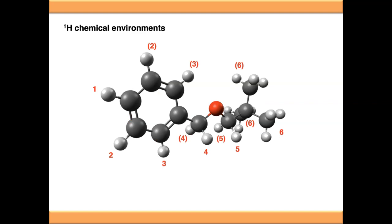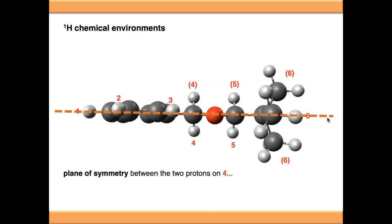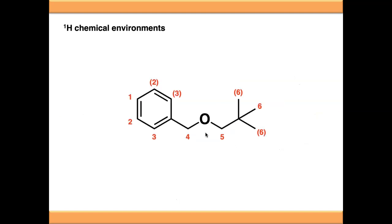Let's convert the molecule into 3D to see what we're doing in terms of axes of rotation and planes of symmetry. We turn the molecule 90 degrees towards you, looking down on top of the oxygen atom. Looking down the backbone, we can see a plane of symmetry all the way through the middle of it. At position 4, one proton is on either side of this plane of symmetry — it runs straight through carbon 4. That means they are chemically equivalent, and position 4 gives a 2H singlet.